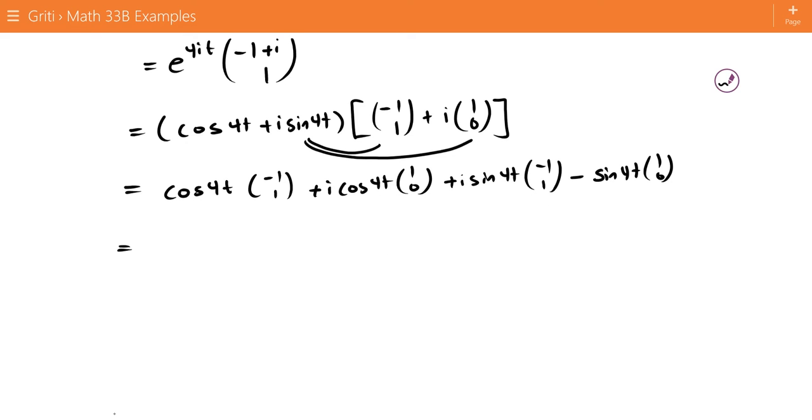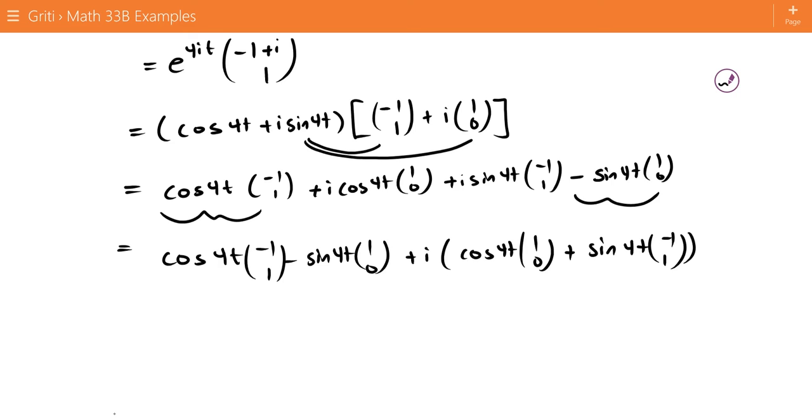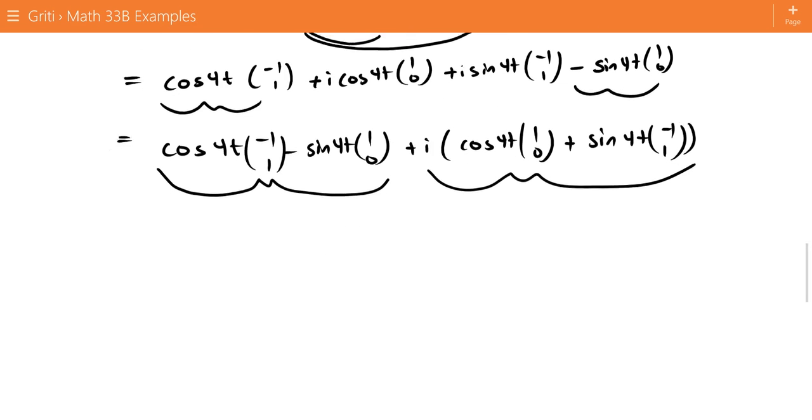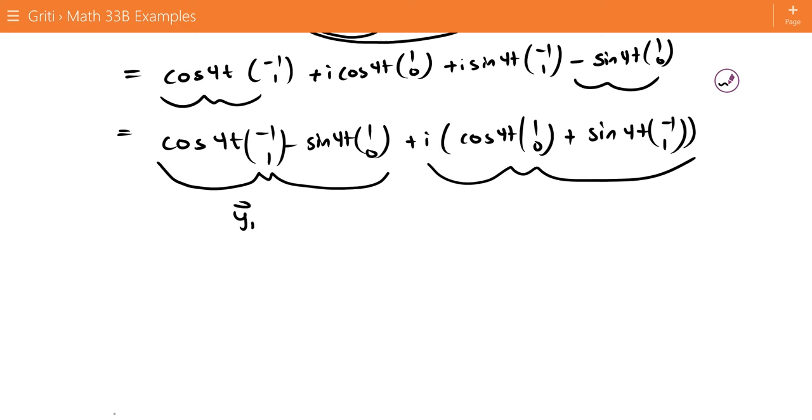Then we group the real parts together. So that's going to be this and that. So cosine 4t, negative 1, 1, minus sine 4t, 1, 0. So this is the real part, and this is the imaginary part of the complex solution. These are going to be our two fundamental solutions.